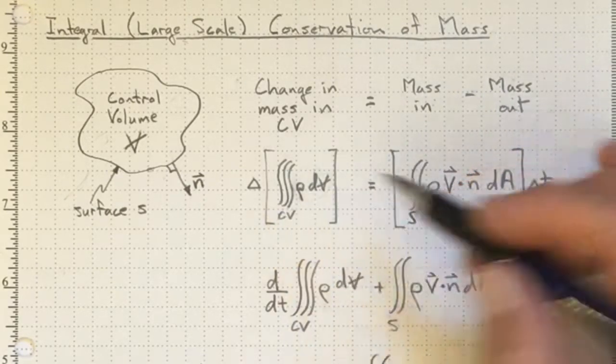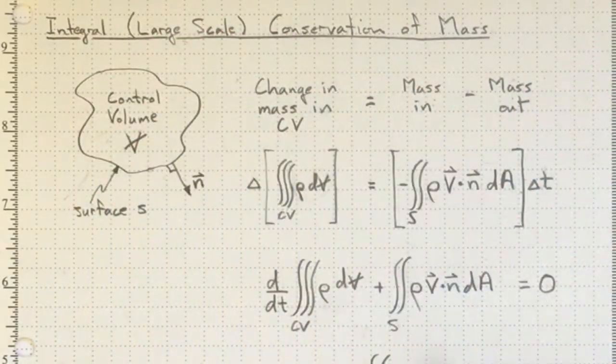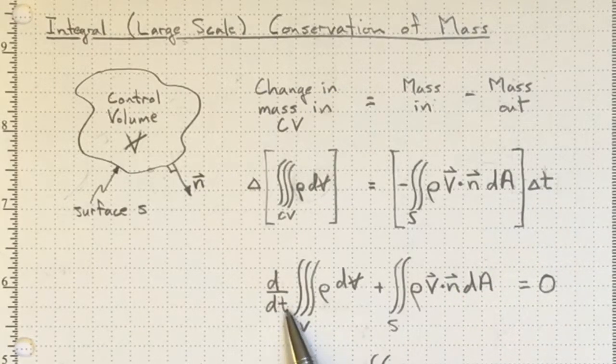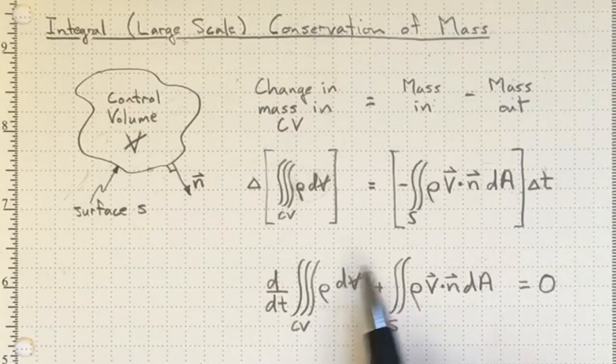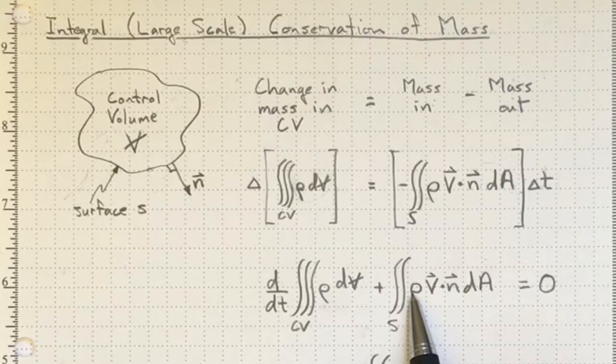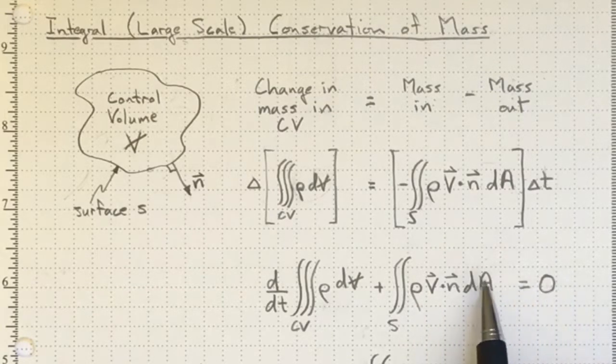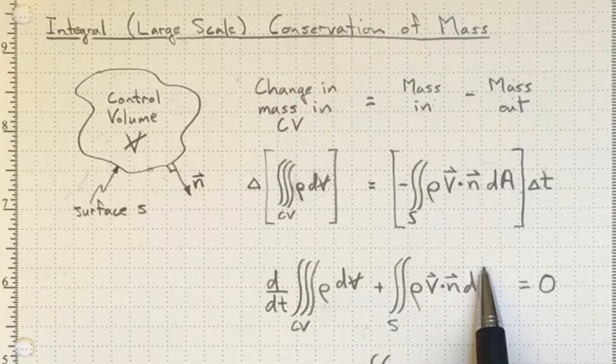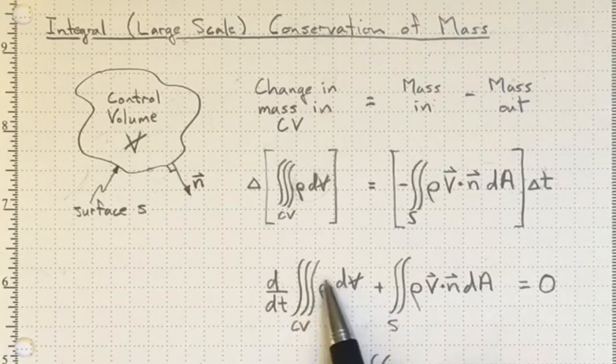Take the delta t to the other side. Make everything small in terms of your integration. And we wind up with the rate of change with time of the mass inside the control volume plus the total of the flows in and out must be equal to zero. So if there's no net flow in and out, i.e. there's the same amount going in as coming out, then there's no change in the stored mass inside the control volume.